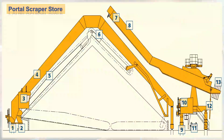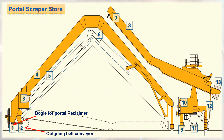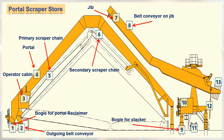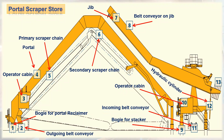The portal scraper store consists of: bogey for portal reclaimer, outgoing belt conveyor, operator cabin, portal, primary scraper chain, secondary scraper chain, jib, belt conveyor on jib, bogey for stacker, operator cabin, incoming belt conveyor, hydraulic cylinder, and jib counterweight. The side scraper store advantages include: suitability for sticky materials, ability to stack and reclaim different material types from separate piles, optimum utilization of building when using overhead tripper, and easily expandable store capacity.